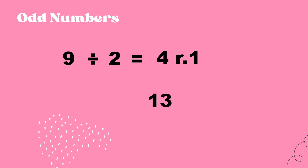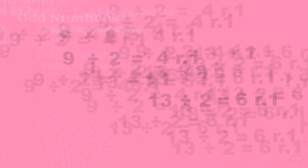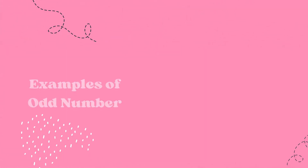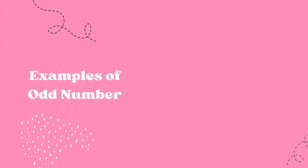Another example: thirteen. Thirteen divided by two is equal to six remainder one. These are some of the examples of odd numbers.